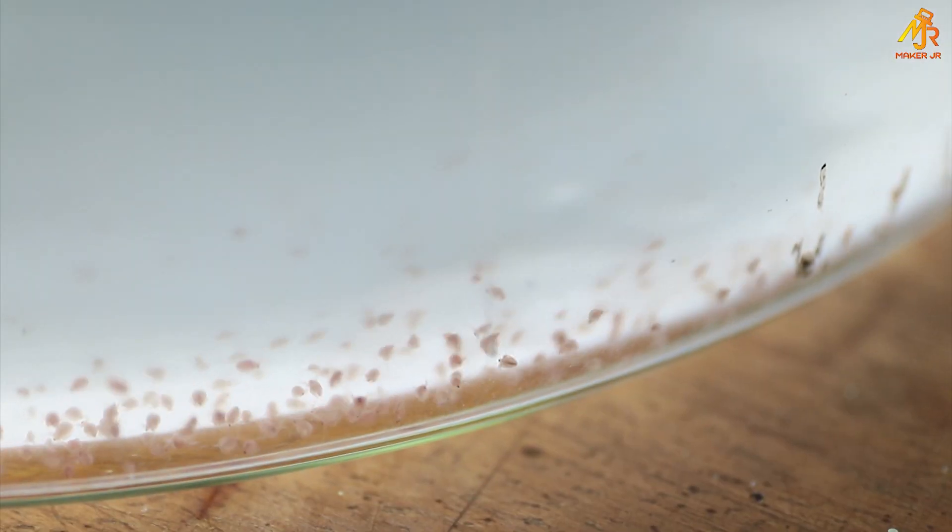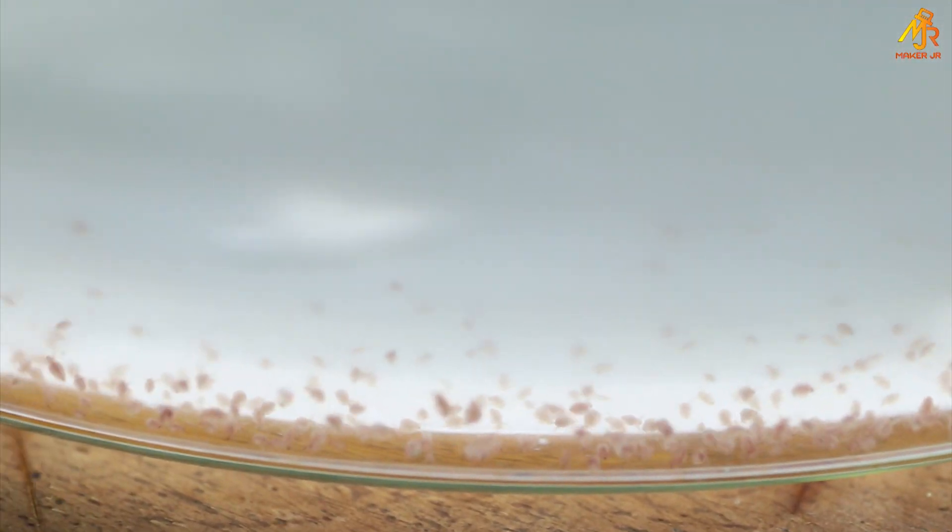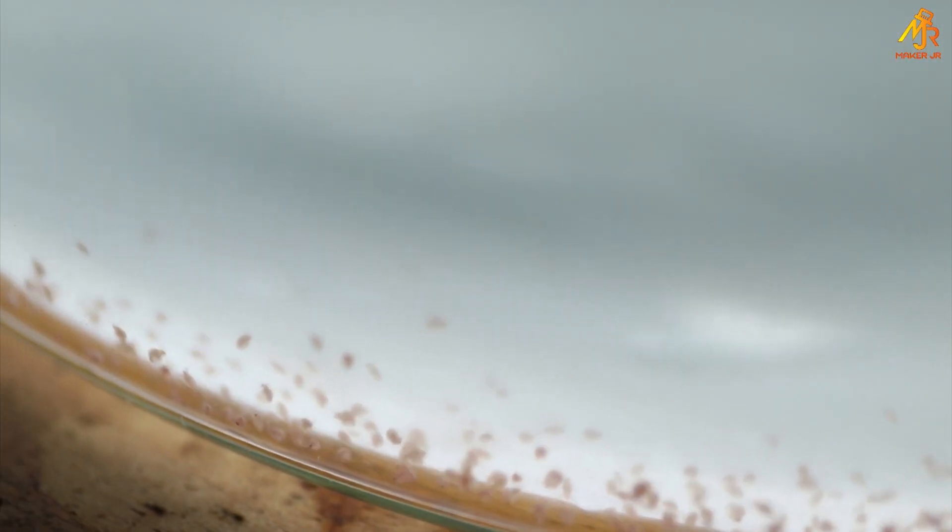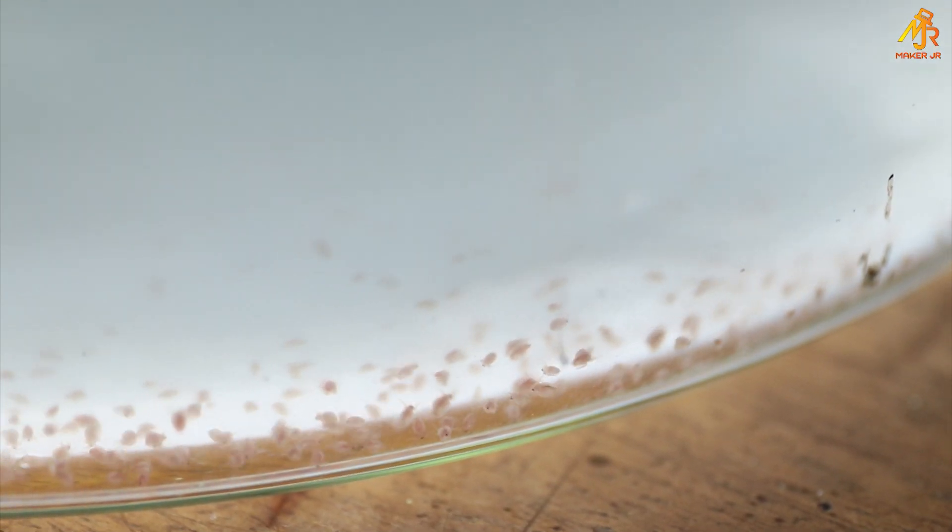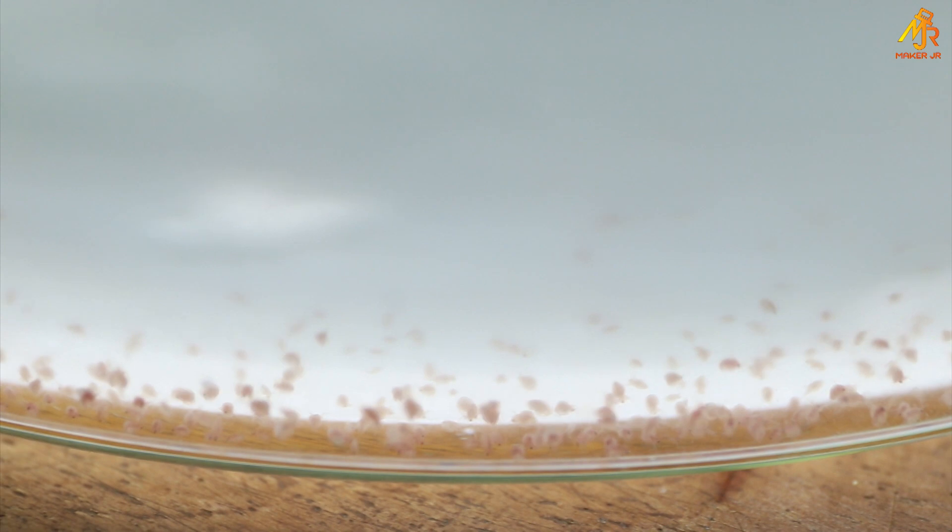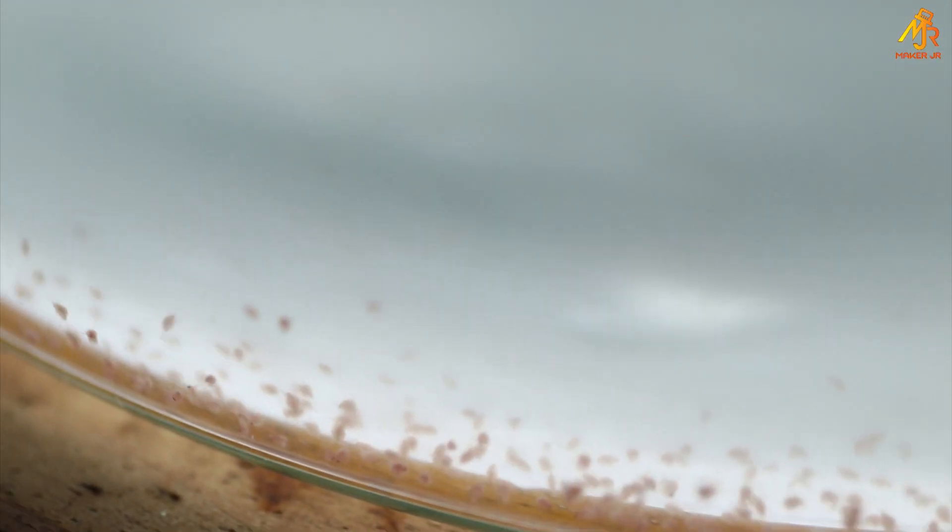They reproduce both sexually and asexually. Normally the population consists of all females that are reproducing asexually. Under optimum conditions, broods are produced every 2 days through asexual reproduction and under adverse conditions, males are produced and sexual reproduction occurs resulting in the formation of eggs.